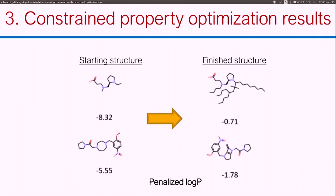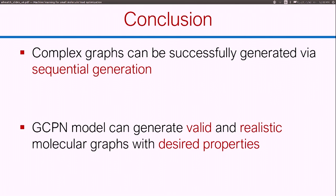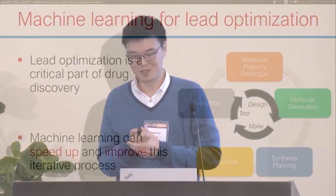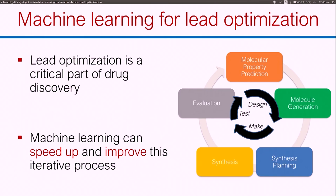In conclusion, this work showed that you can generate pretty complex graphs in a sequential generation process, and that the GCPN model can generate molecule graphs that are valid, realistic, and have desired properties. Lead optimization is a pretty important part of the drug discovery process, and I've shown two examples in which we use machine learning to hopefully speed up and improve parts of this process. Thank you.